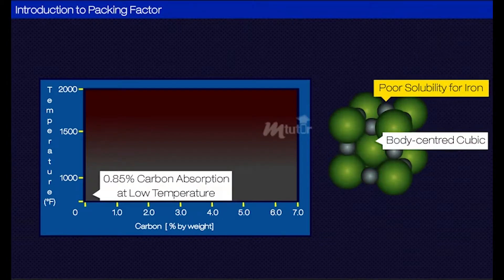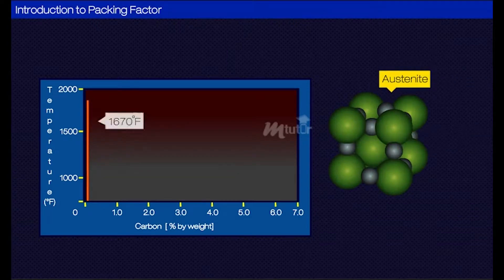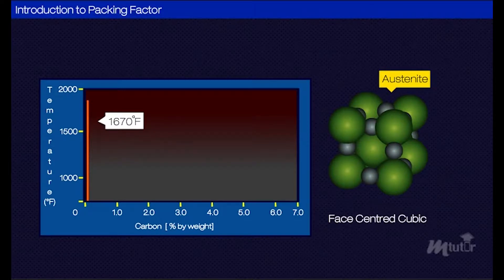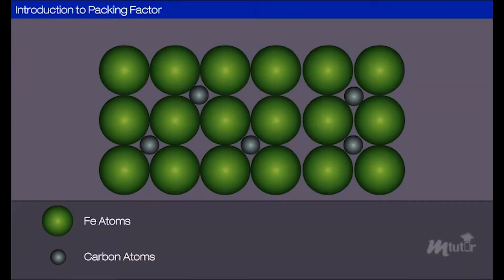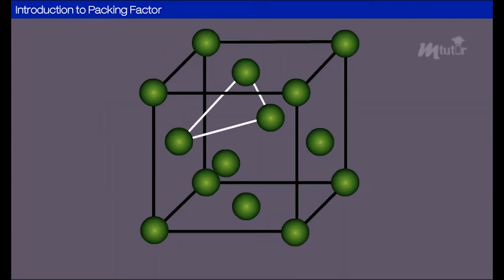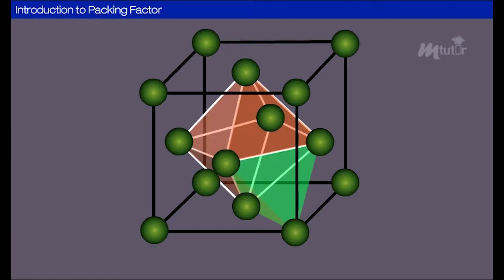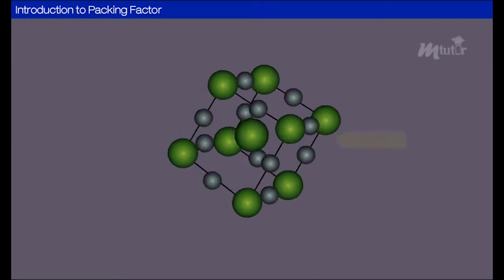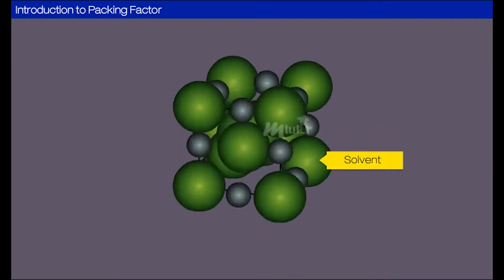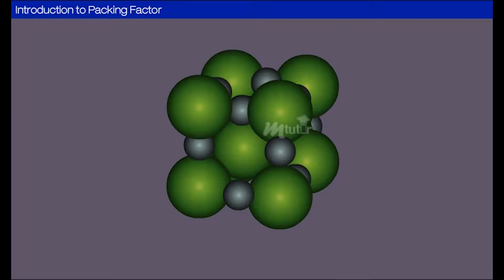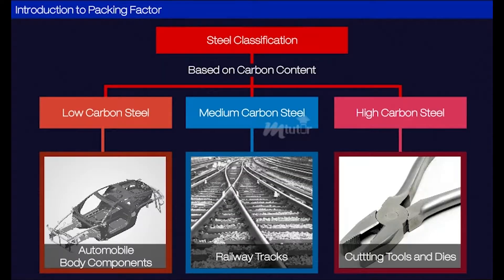But at higher temperatures, ferrite changes to a non-magnetic form of iron called austenite, absorbing the carbon and forming a face-centered cubic structure. Given here is the carbon steel alloy that we have created. Carbon atoms have smaller atomic radii which fit into spaces of the iron lattice structure. Here, the carbon atom, that is the solute, gets dissolved in the solvent, that is the iron lattice. So we say that carbon plays a major role in the formation of hard steel.